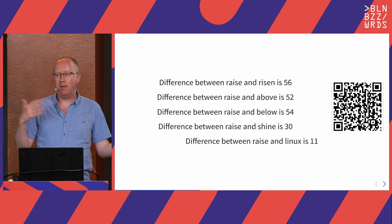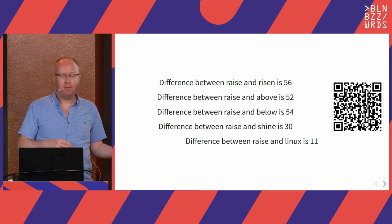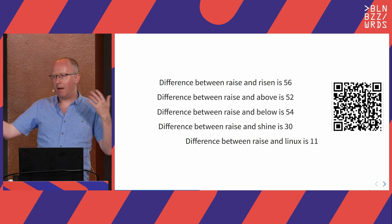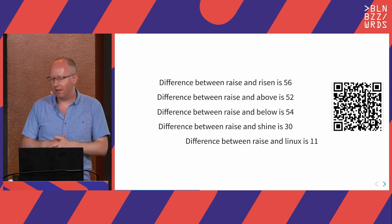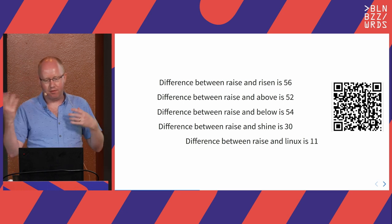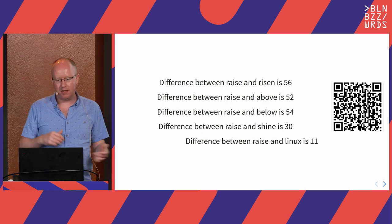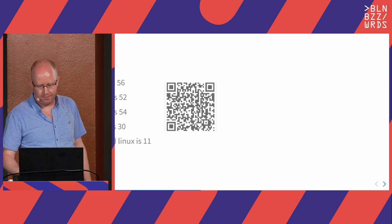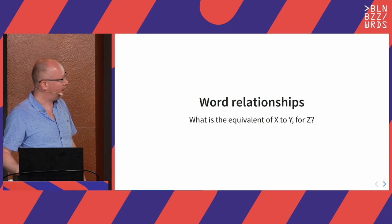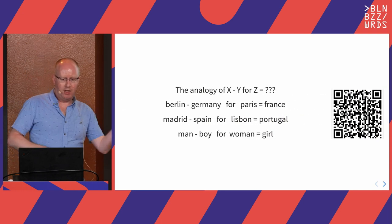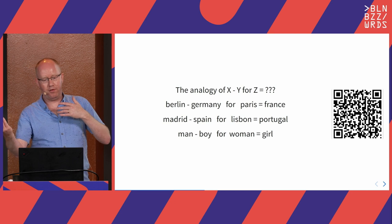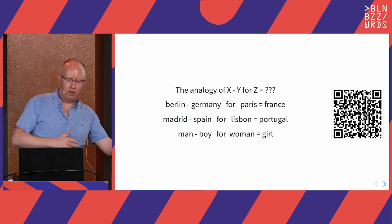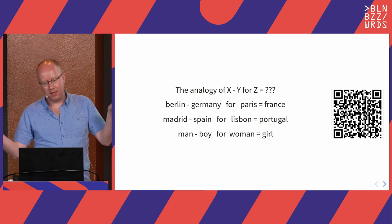You can also calculate how similar two words are — if you're going to substitute one word for another, how likely are you to get something meaningful? Rays and risen, rays and above are quite similar. Rays and Linux — not very similar. We can also do word relationships. Berlin is to Germany as Paris is to France. Madrid is to Spain as Lisbon is to Portugal.